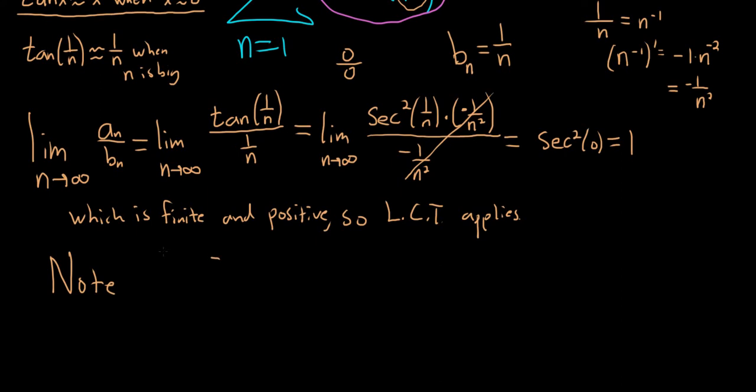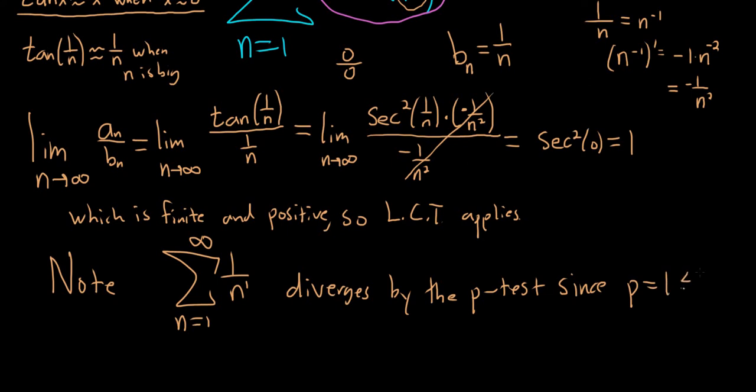So note, the sum, as n runs from 1 to infinity of 1 over n, this is the harmonic series. Or it's just a P series with P equals 1. So this diverges by the P test. Since P is equal to 1, which is less than or equal to 1. Remember, the P series will diverge when P is less than or equal to 1, and it will converge when P is greater than 1.